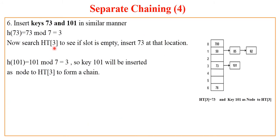Next we have 73 and 101. In a similar manner we can insert them. We know that 73 mod 7 is 3, so we have accommodated 73 here. But for 101, remainder is 3.